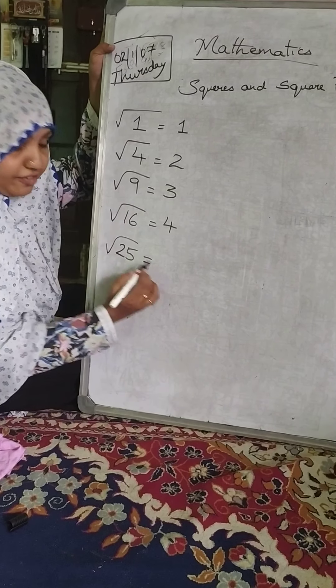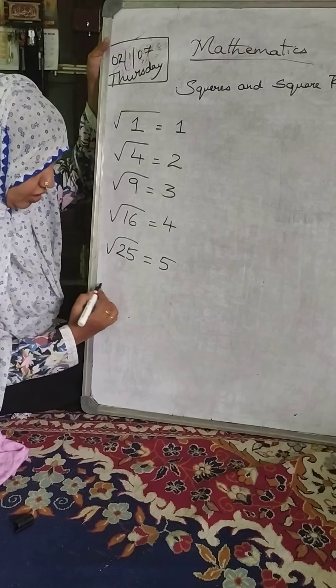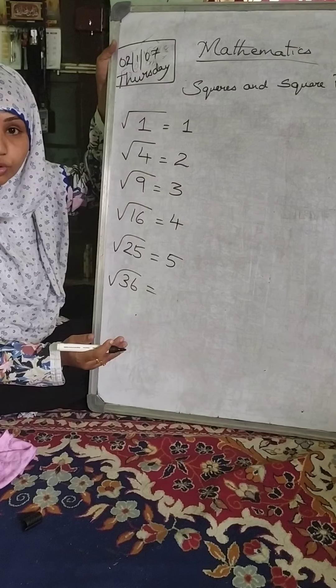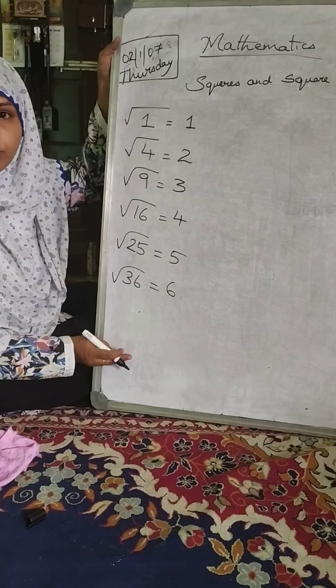Square root of 25, 5×5 are 25 so 5, square root of 36, which one is 36, 4×4 are 36, no, 6×6 is 36, 36 and so on are the square roots.